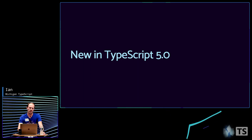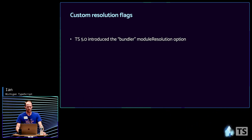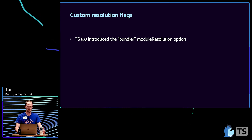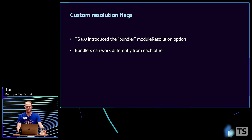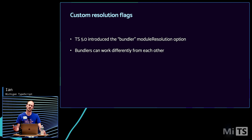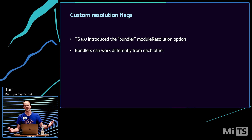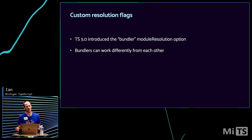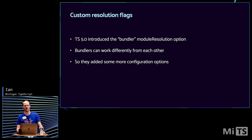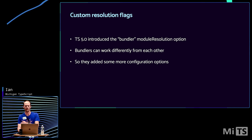So what changed in 5.0 that we're going to talk about? 5.0 added a bundler module resolution option, which there's another video for you can check out. But bundlers can work differently from one another — some have features others don't; not everyone supports exports maps or imports maps. So how is TypeScript going to support all of these different kinds of bundlers when they all have different features? That's where they added these configuration options, so you can tweak the way that TypeScript works to match your bundler.